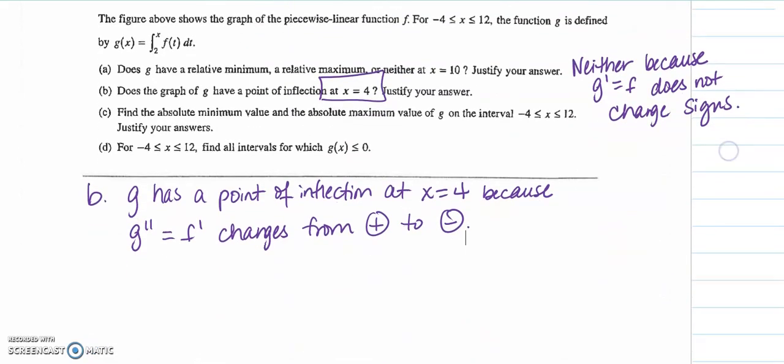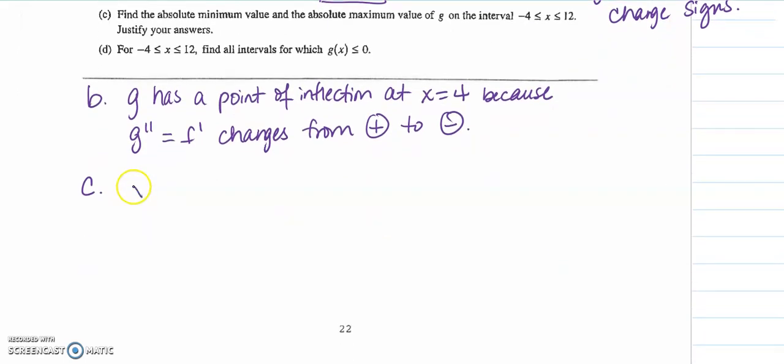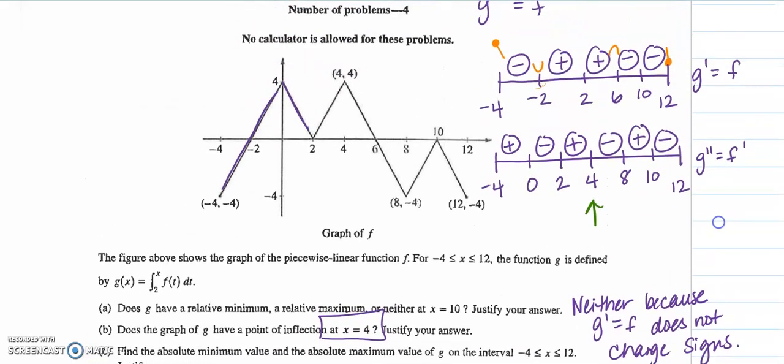Part c: find the absolute minimum value and the absolute maximum value of g on the interval negative 4 to 12. In your explanation you're going to need a comparison, because when you remember what we talked about with your sign chart, we said that there were two possible maximums and two possible minimums.